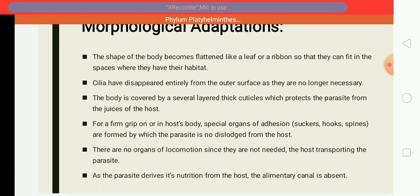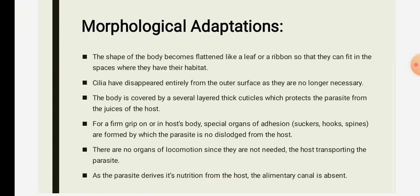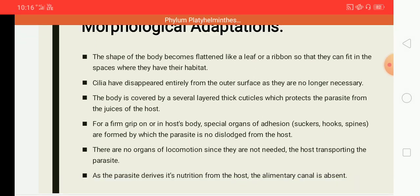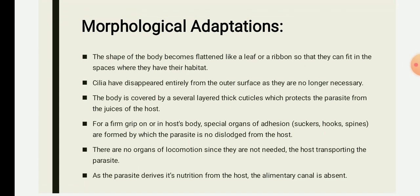Considering the organ of locomotion, there will be total reduction of locomotory organs. This total reduction of locomotory organs is observed in the adult parasite, whereas the free-living larval phases may have an ectoderm that becomes ciliated. But in the adult, the cilia have disappeared entirely from the outer surface, as they are no longer necessary.